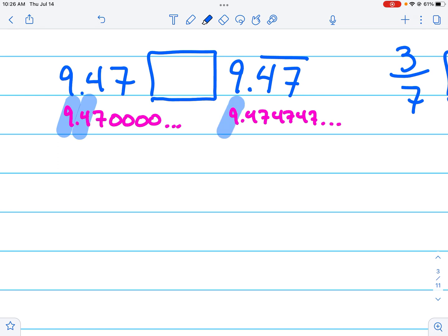...but here the zero and the four is the first time they're not the same, and zero is less than four. So the number on the left is less than the number on the right. That's the way you work that problem.